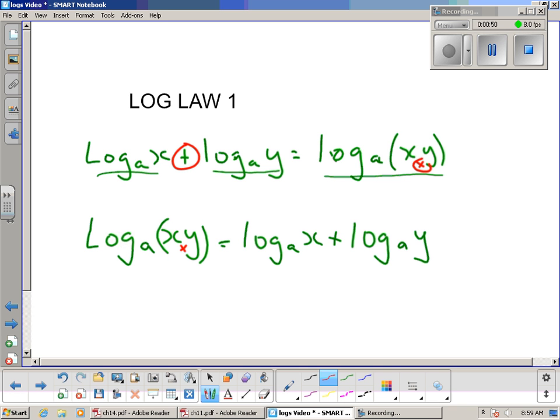When we separate a product into two separate bits, the x and the y, we've got a plus in between instead. That allows us to either join things into one logarithm or separate things into two different logarithms.